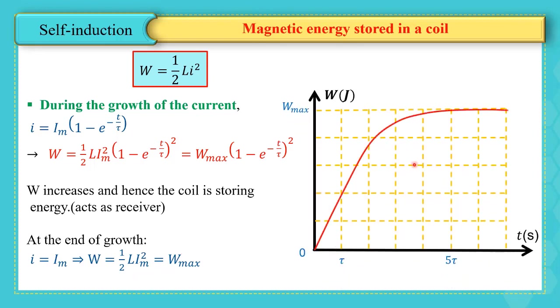As seen in the figure, W starts from zero, increases as i increases, and at the end reaches a maximum value W_max = ½Li_max².